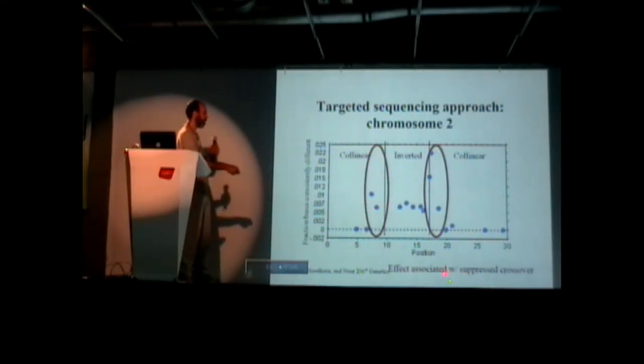It's not the inverted region per se, but it's the effect of stopping crossing over that causes this difference. So stopping crossing over allows the two species to stay different. If there was crossing over, they would not stay different.